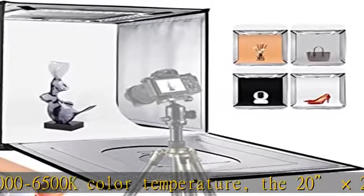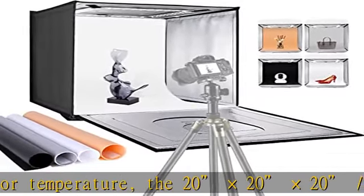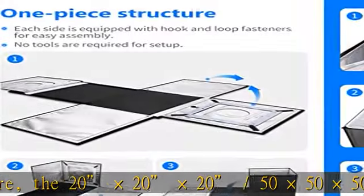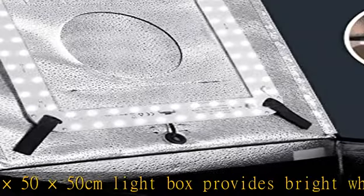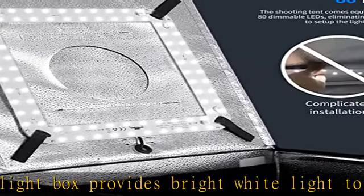The brightness adjustment knob on the power adapter allows you to conveniently adjust light brightness. Even and diffused lighting, the reflective interior and diffusion cloth can reduce shadows and hot spots for a clean background and glare-free illumination.